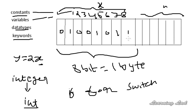Once again: a constant is an entity which doesn't change — we have integer, floating point, character, and string constants. A variable is a name given to a memory location in order to access it easily. A data type indicates what type of data is stored in variables. And keywords are words whose meaning is already defined to the compiler, and we can't use them as variable names. So this is about constants, variables, data types, and keywords.